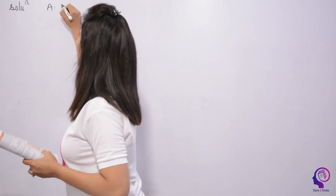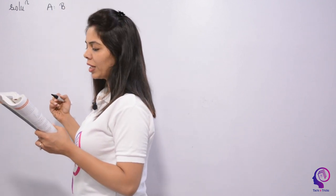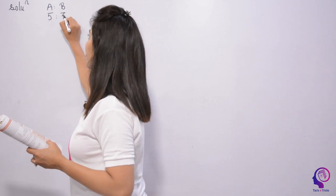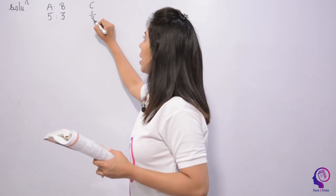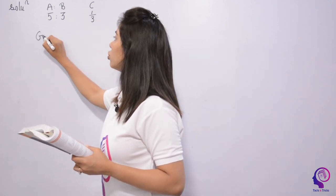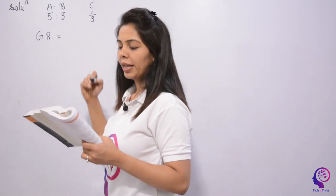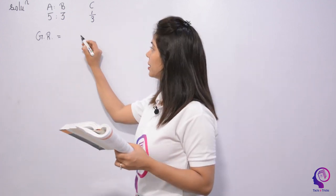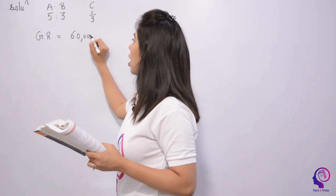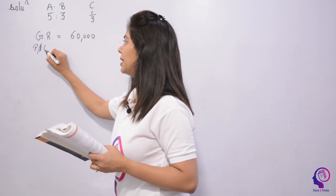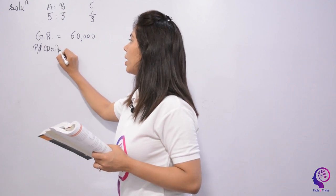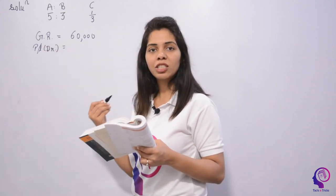Let us write down the information. There are two partners A and B. Their profit sharing ratio is 5:3. C is admitted with 1/3 share. The general reserve in the existing balance sheet is $60,000. P&L has a debit balance, that is asset side, of Rs. 20,000. These existing balances are to be shared by the old partners in their old ratio.